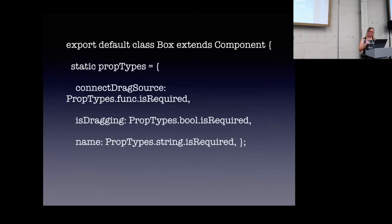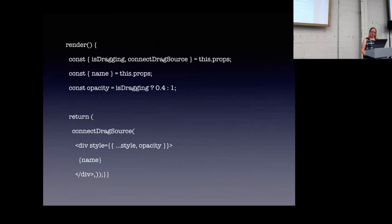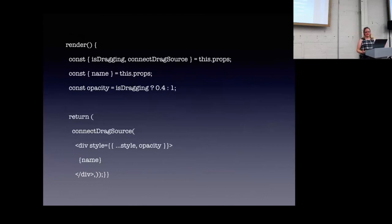We set our prop types — this is the information we expect to get passed. We have connectDragSource, isDragging, and the name of what we're dragging. In our render, we grab isDragging and connectDragSource names, and in this example we set the opacity to change while the item is being dragged. Then we return a simple little box that has that opacity, preset styles, and just the item's name in it.